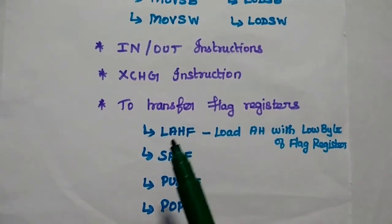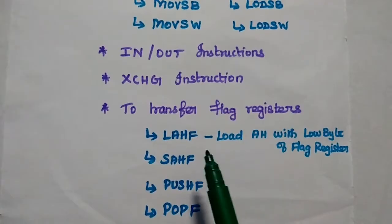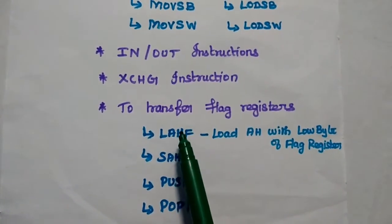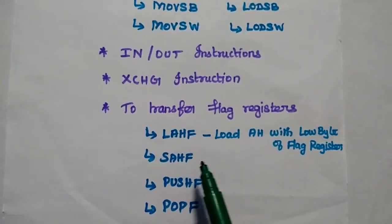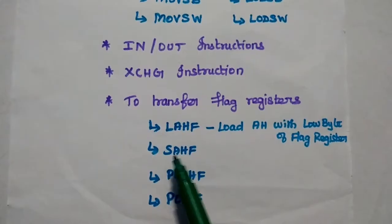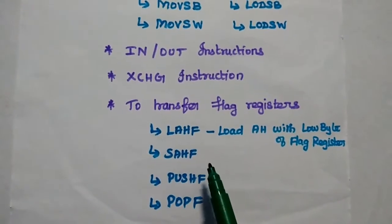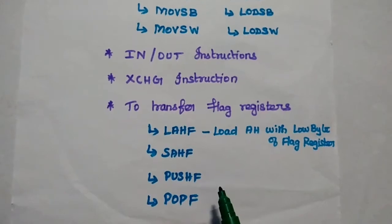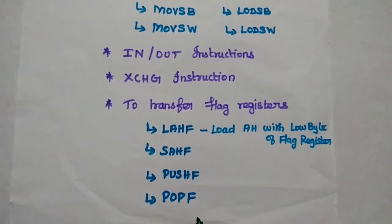The last Data Transfer type is Transfer Flag Register Instructions. We can update the status of the Flag Register using LAHF — that is Load AH with the Low Byte of the Flag Register. We can update any register using this instruction. Similarly, we can have SAHF — that means Store AH with the Flag Register. PUSHF means we can send data to the Flag Register. POPF means we can get data from the Flag Register.